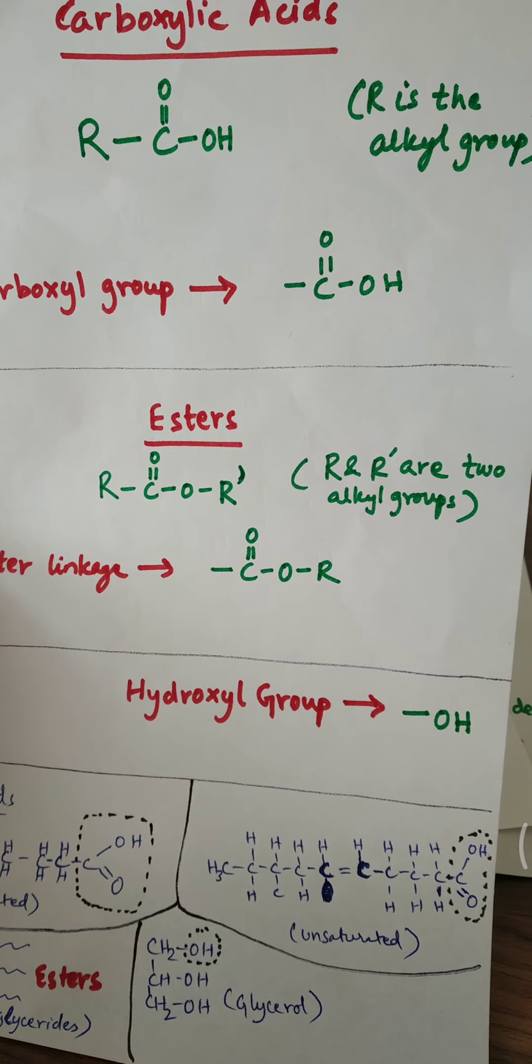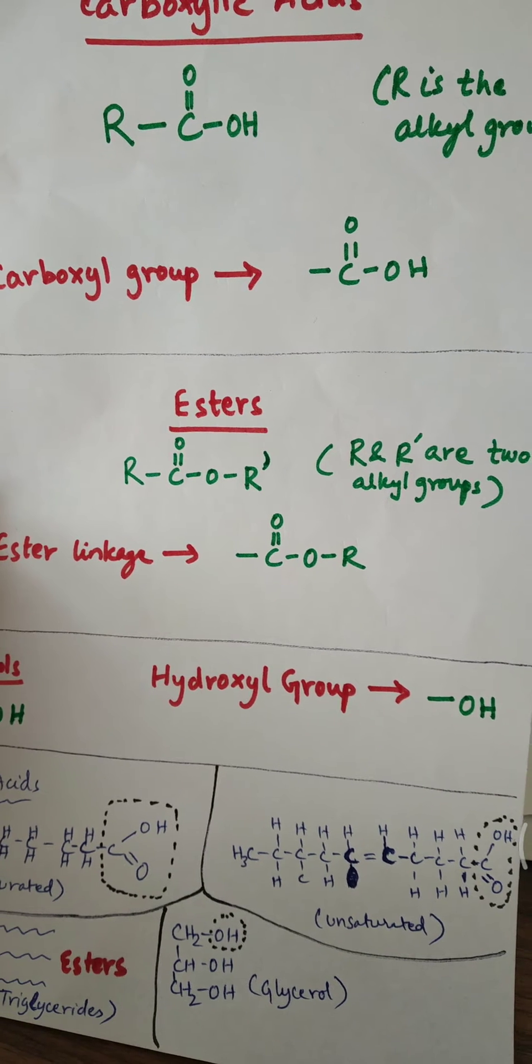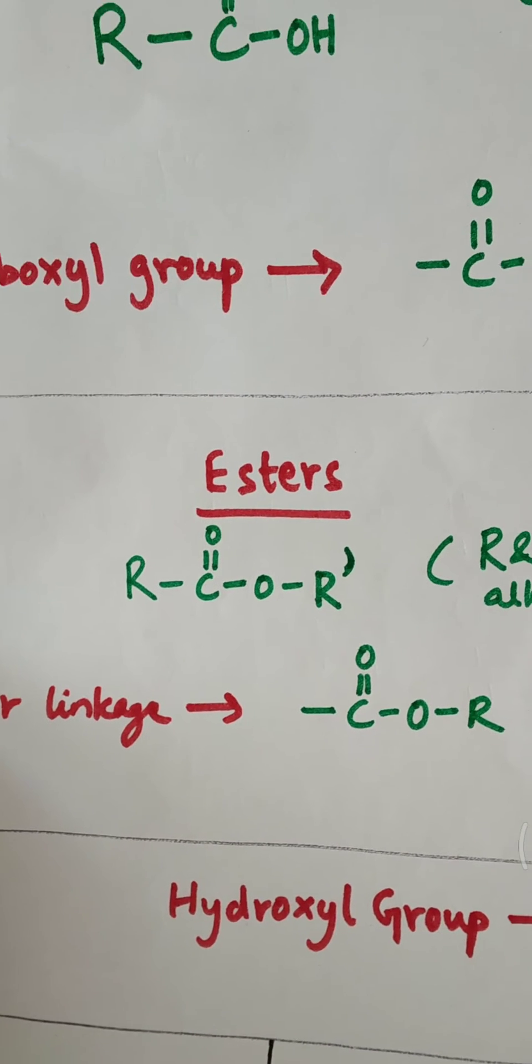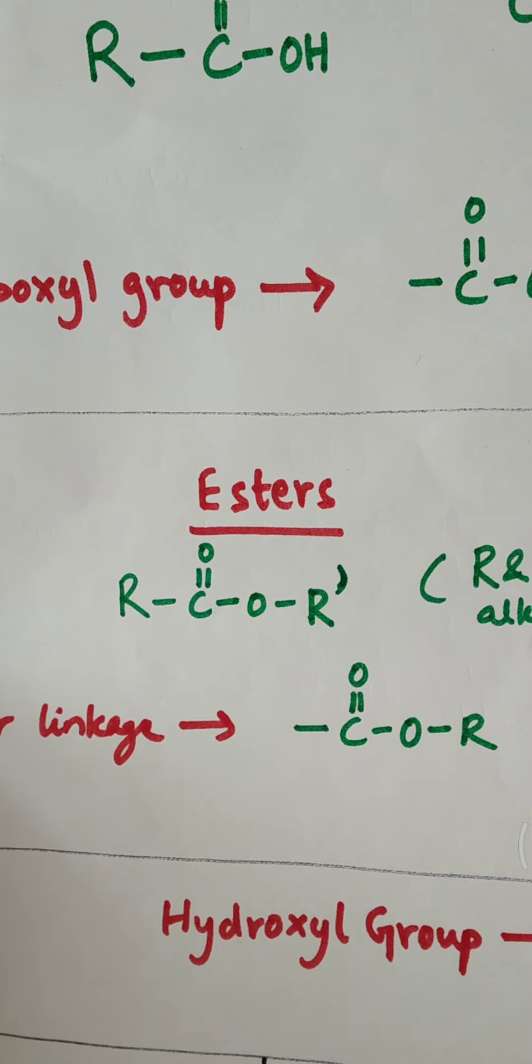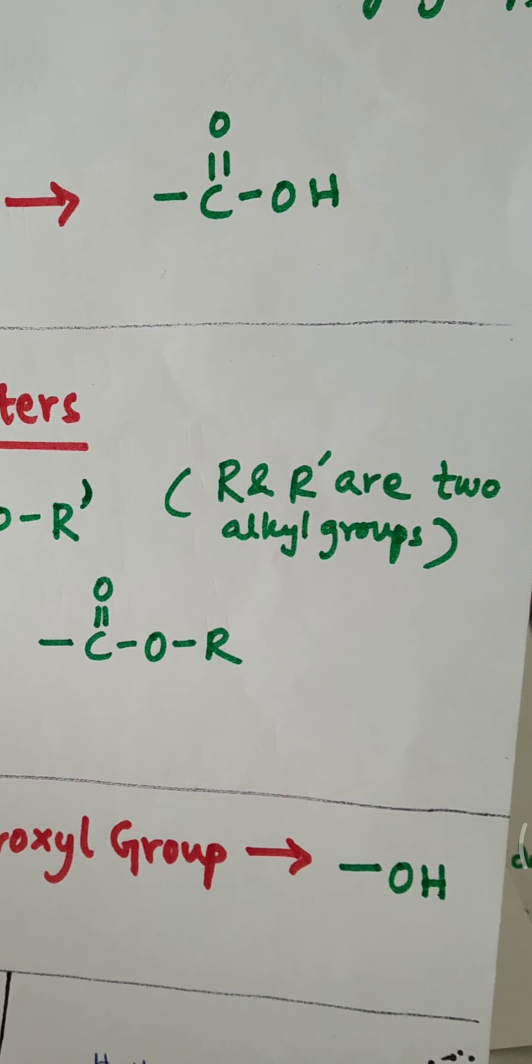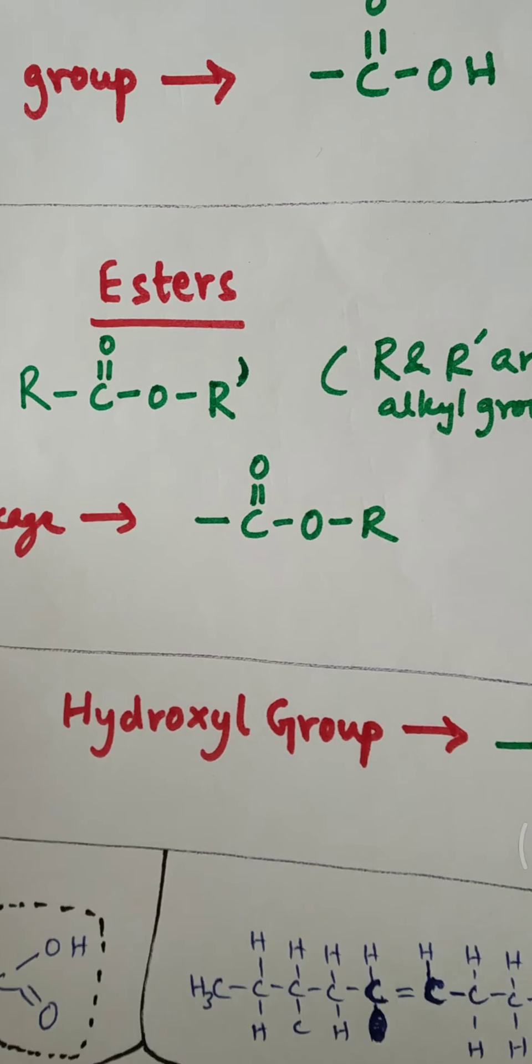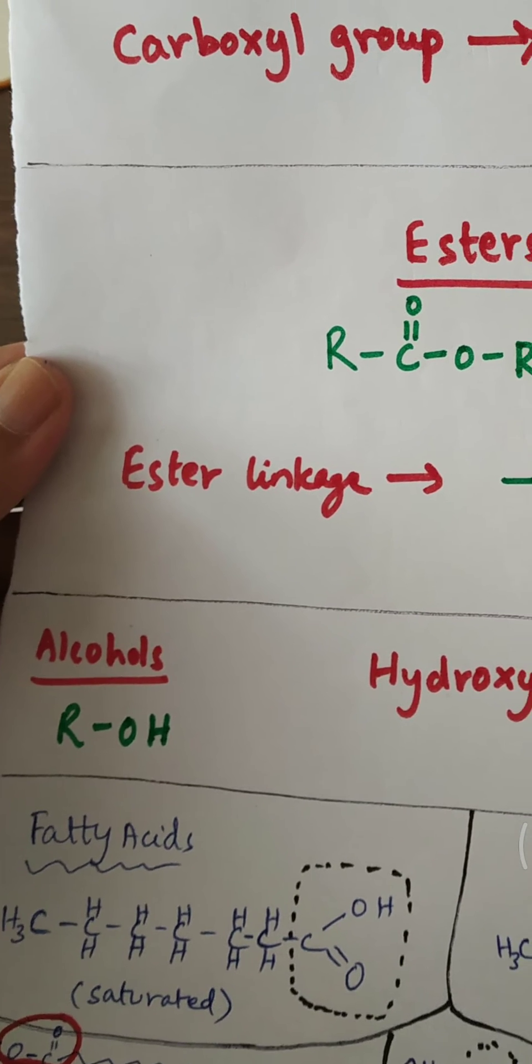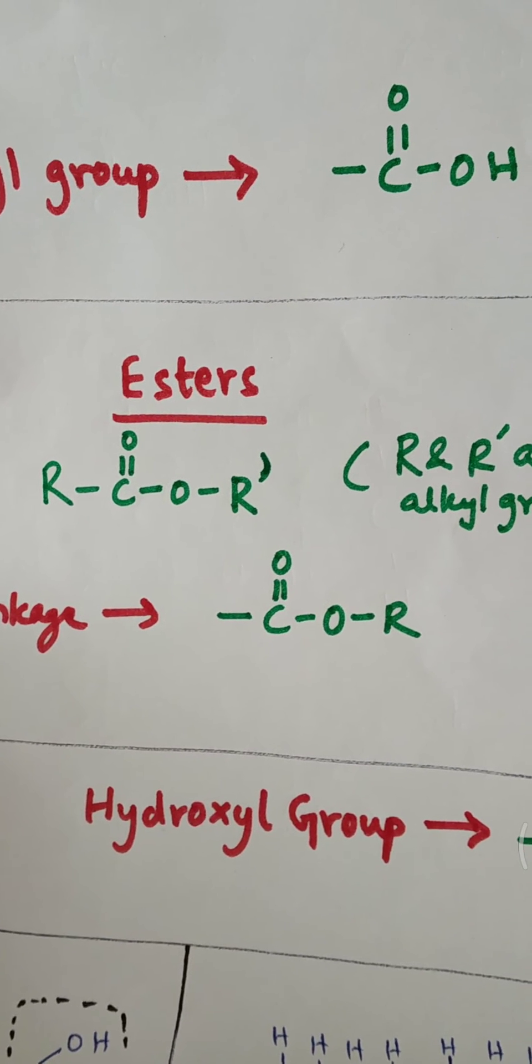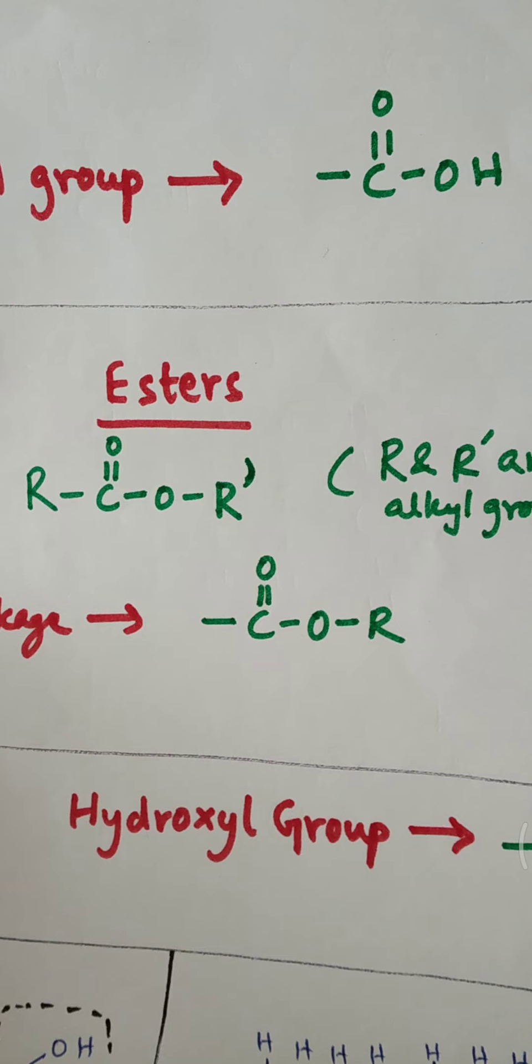The next important functional group is esters. The formula for esters is R-C double bond O-R'. Here R' and R are two different alkyl groups, sometimes they may be the same. Now if I'm talking about ester linkage, I'm talking about just the ester bond in an ester molecule. The ester linkage is just the bond C double bond O and single bond O.